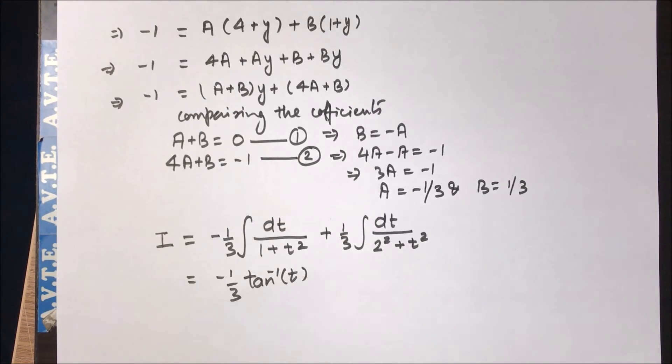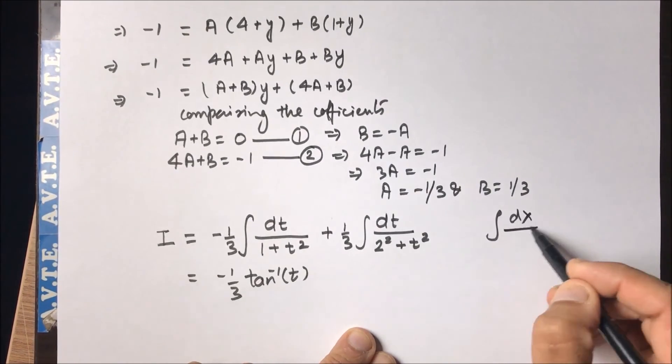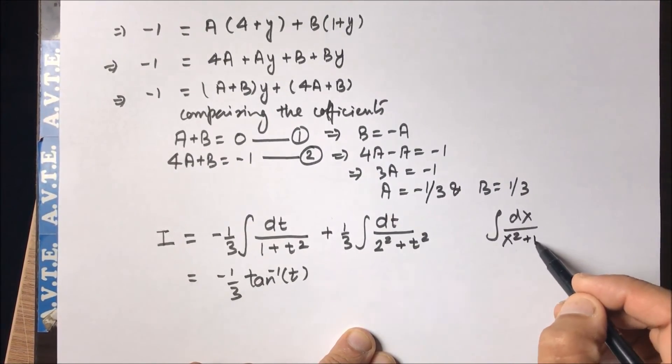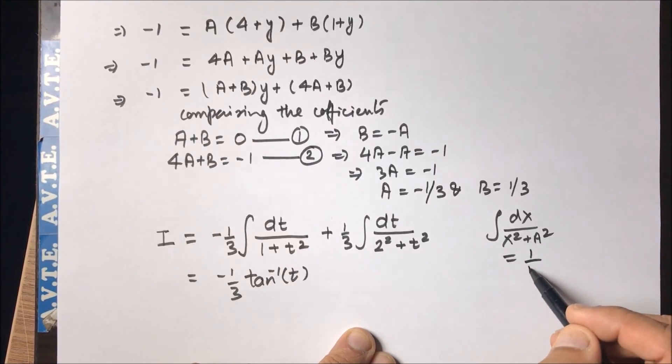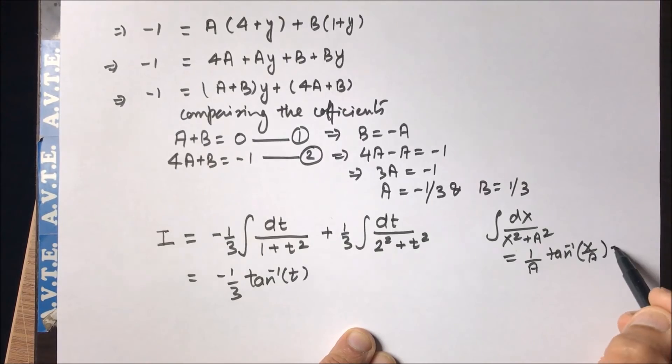And the other part is a special integration which is dx over x square plus a square, or a square plus x square, which is one by a tan inverse of x by a plus some constant.